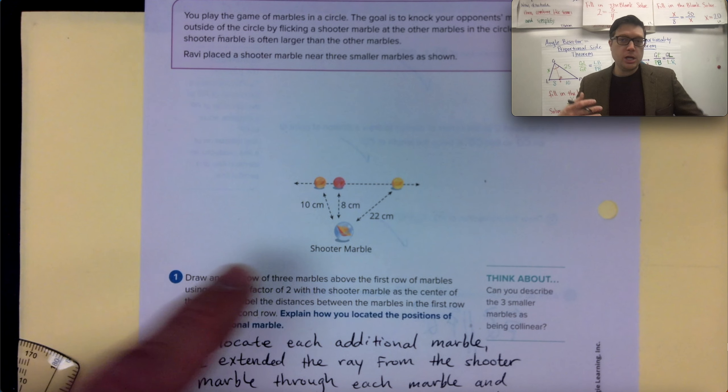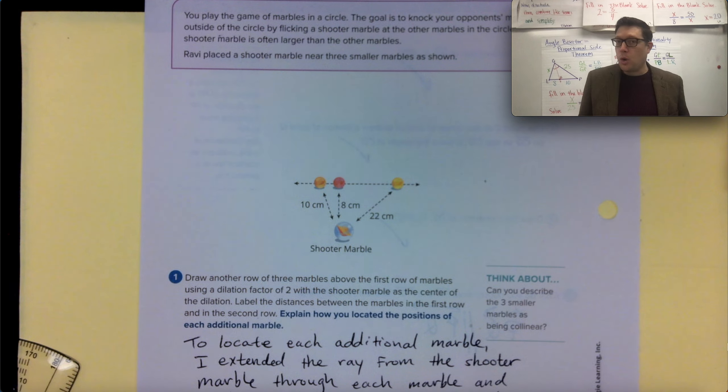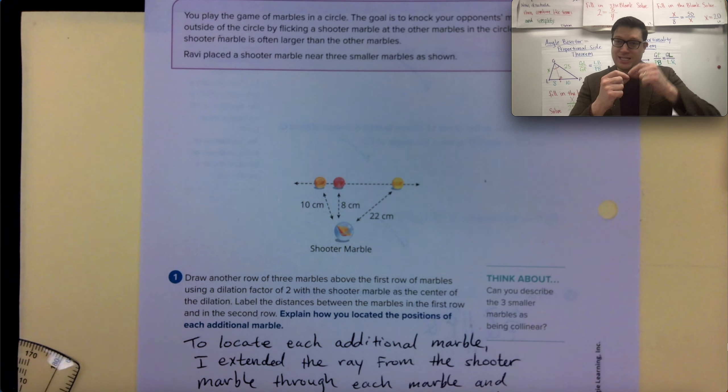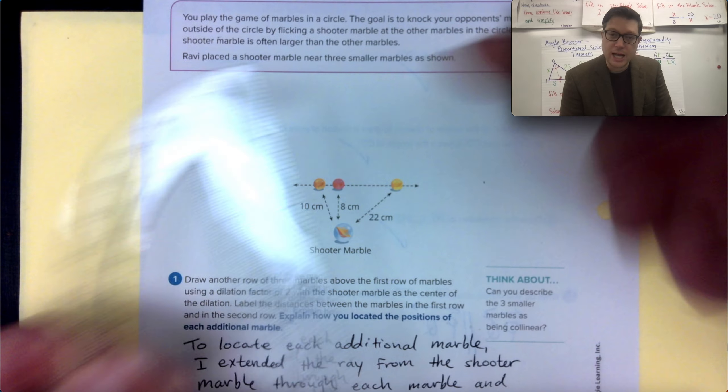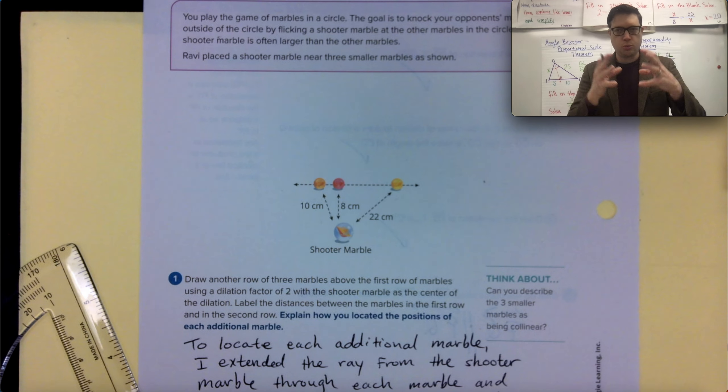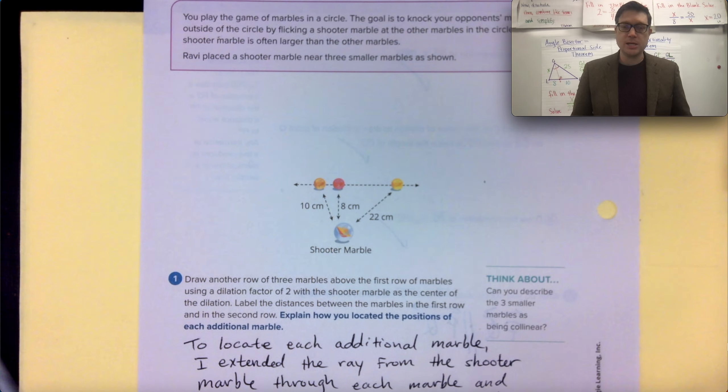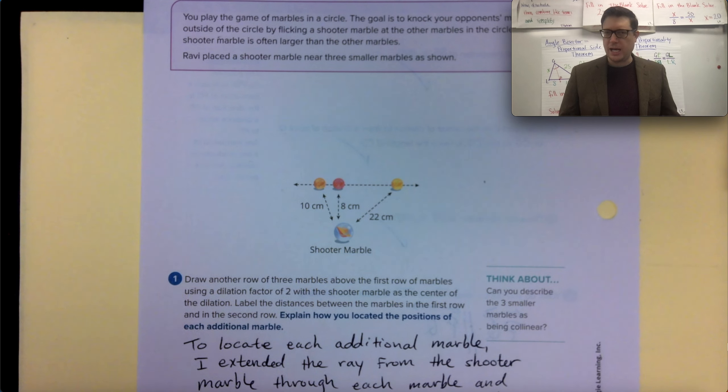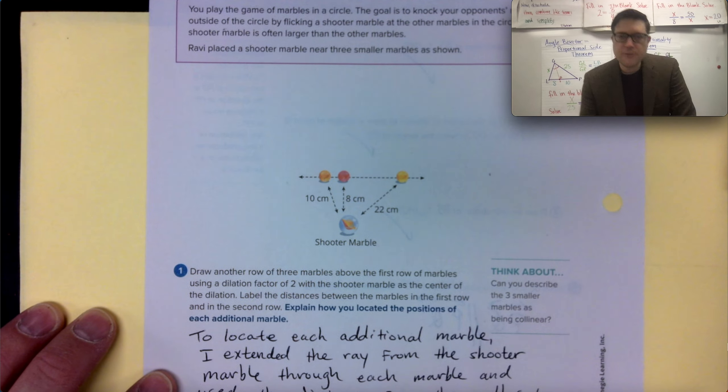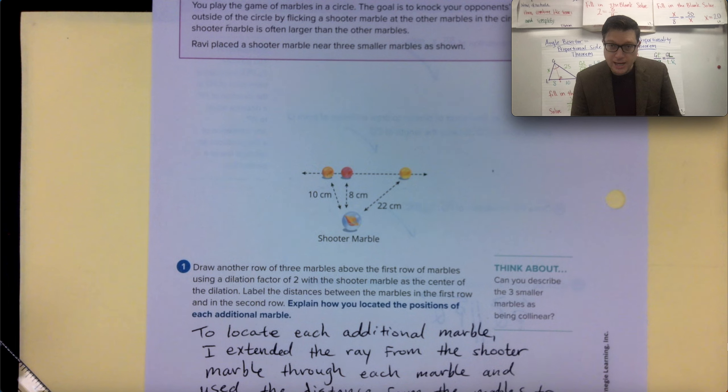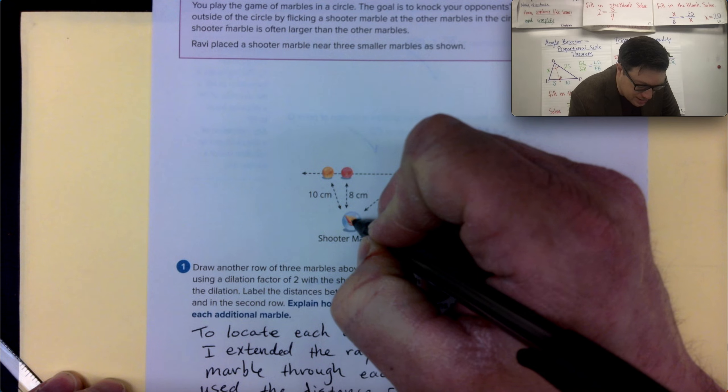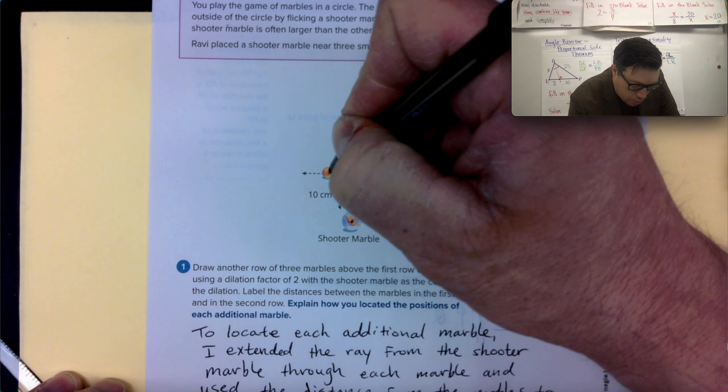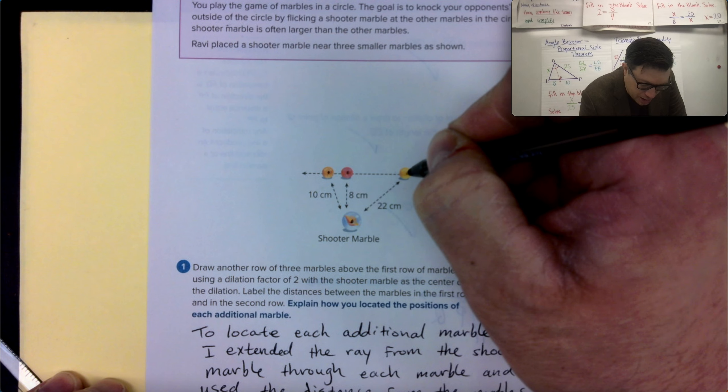So on a dilation transformation like this one, that dilation factor is really about the distance between these two shapes. Now, I don't have 10 centimeters of space like this says. This is trying to represent a real world problem in a smaller context. So we're going to go ahead and just use some sci-fi CGI tricks. Here's the first thing I'm going to do. I'm going to use my protractor, the ruler edge of my protractor, to draw a ray, and I'm going to start from the center of the shooter marble, and I'm going to draw a ray through each of these marbles.